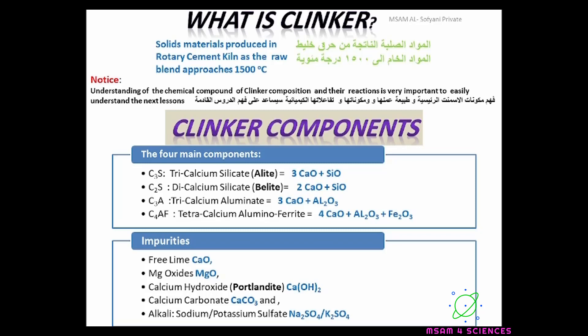The components of clinker. There are four main components and a small amount of impurities. First: C3S — tricalcium silicate (Alite) — chemical compound: lime plus silicon. Second: C2S — dicalcium silicate (Belite) — lime plus silicon. Third: C3A — tricalcium aluminate — lime plus aluminum oxide. Fourth: C4AF — tetracalcium aluminoferrite — lime plus aluminum oxide plus iron oxide. The impurities include free lime, magnesium oxide, calcium hydroxide, calcium carbonate, and alkalis such as sodium, potassium, and sulfate.